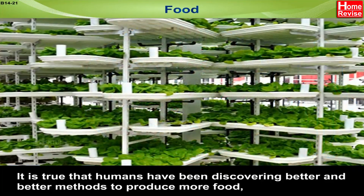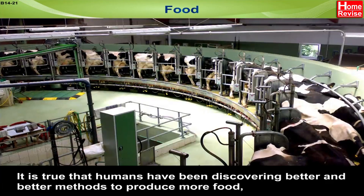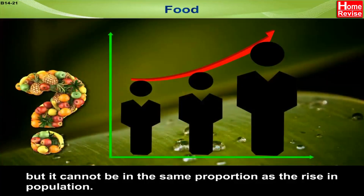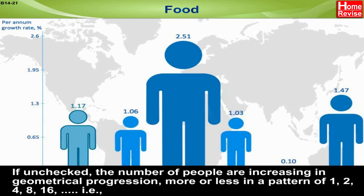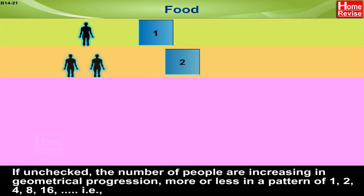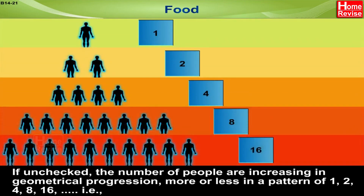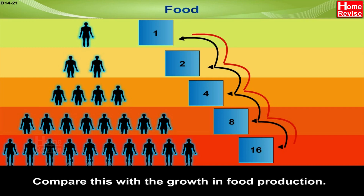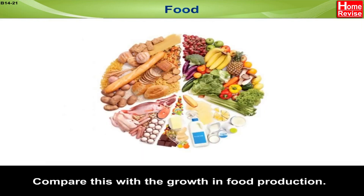Food is the most important need of any living organism. Humans have been discovering better methods to produce more food, but it cannot be in the same proportion as the rise in population. If unchecked, the number of people increases in geometrical progression — more or less in a pattern of 1, 2, 4, 8, 16, and so on. That is, the number at each step is being multiplied.